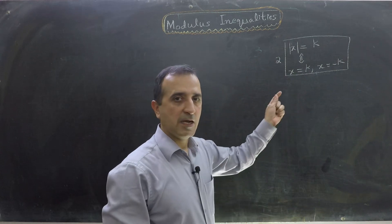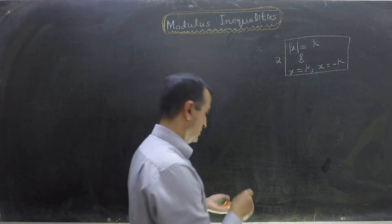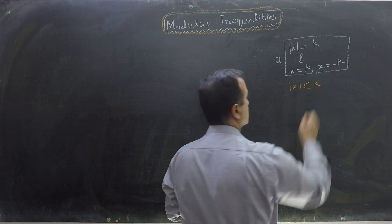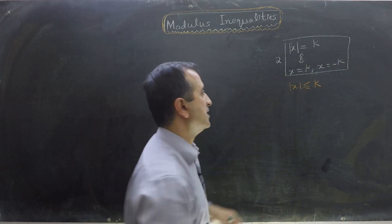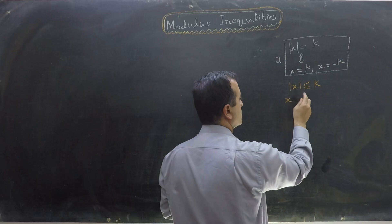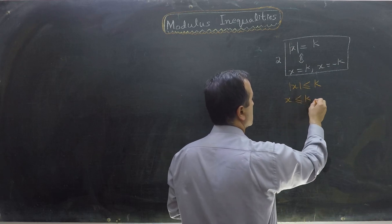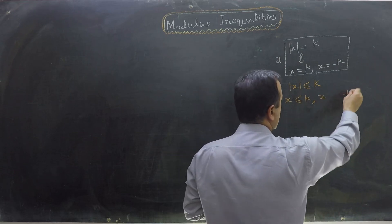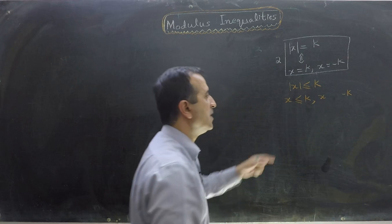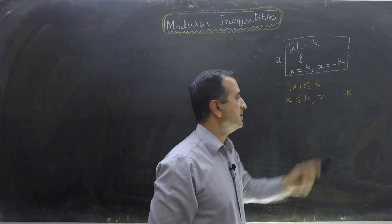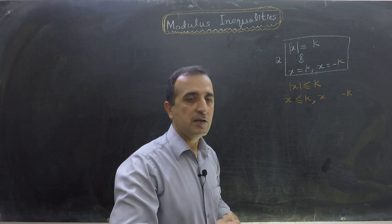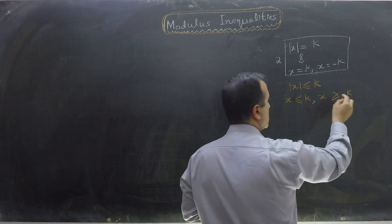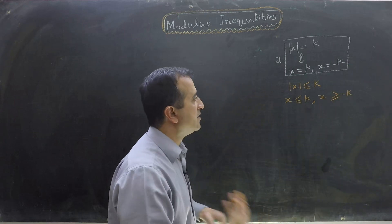We can extend that rule for inequalities. So if mod of x is less than or equal to k, then we can say x is less than or equal to k, and also x is greater than or equal to minus k. Because of the minus sign, that inequality switches from less than or equal to greater than or equal to.